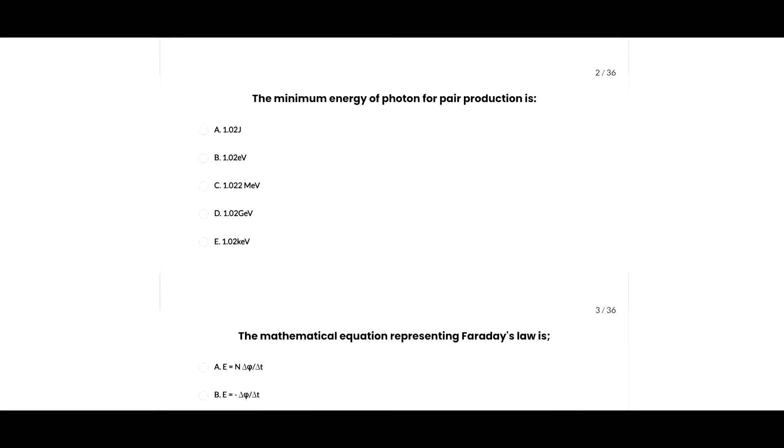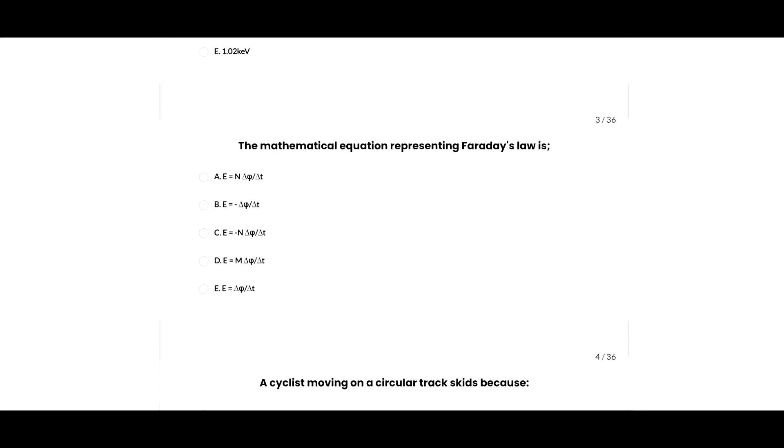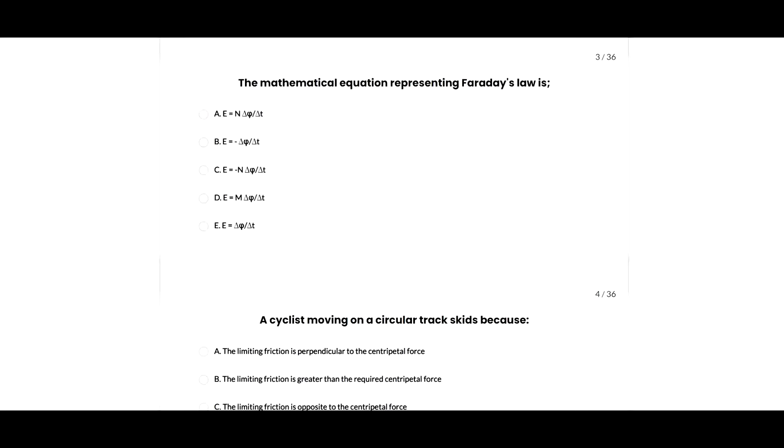Next question: the minimum energy of a photon for pair production is 1.02 MeV, so C option is correct. Next question: the mathematical equation representing Faraday's law is given as E equals minus delta phi over delta T, so B option is correct.